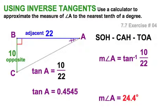but this is the book's way of doing it. So if you do it this way, and again you turn that 10 over 22 into a decimal, and then execute the inverse tangent, you will get this number.